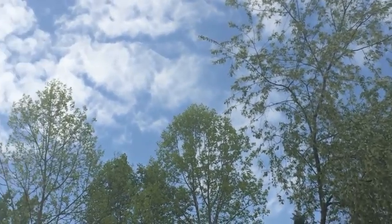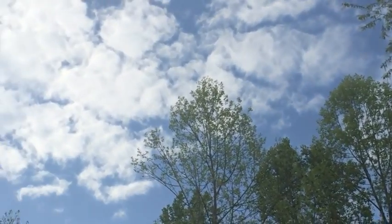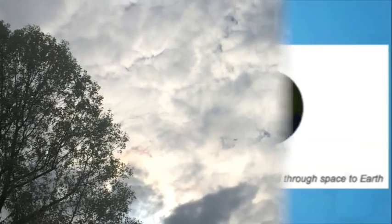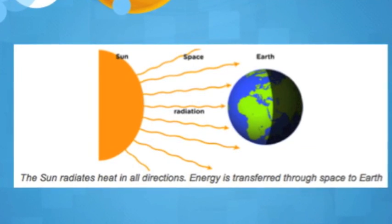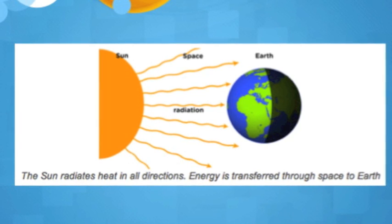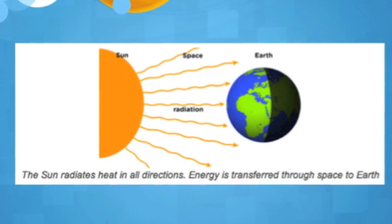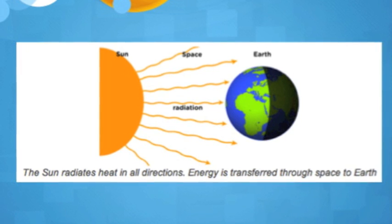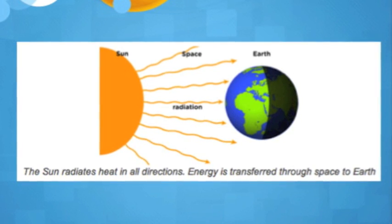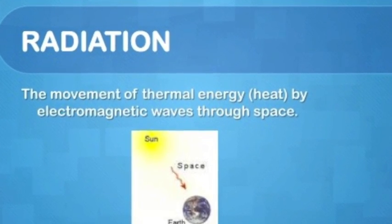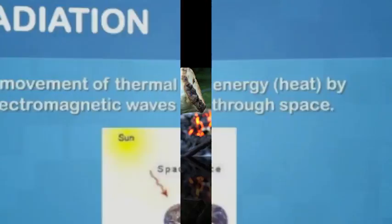Have you ever wondered why you get so warm on a nice spring day? It's not conduction or convection — it's radiation! The source of heat for our planet is the sun. The sun's energy moves through space, then through the Earth's atmosphere, and finally reaches the Earth's surface. The sun's radiation warms the Earth's atmosphere and surface and becomes heat energy. Radiation is the movement of heat via electromagnetic waves through space.